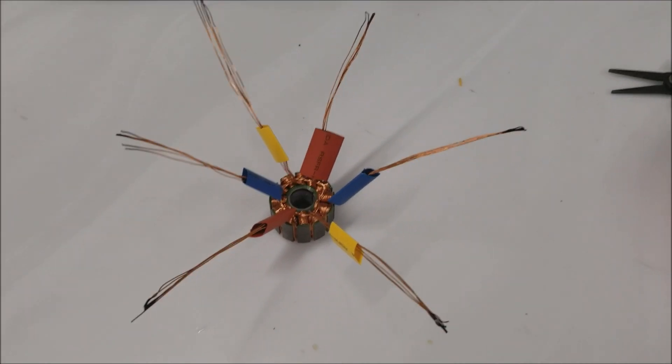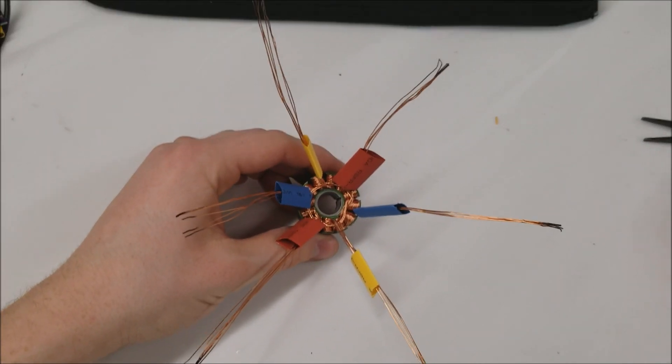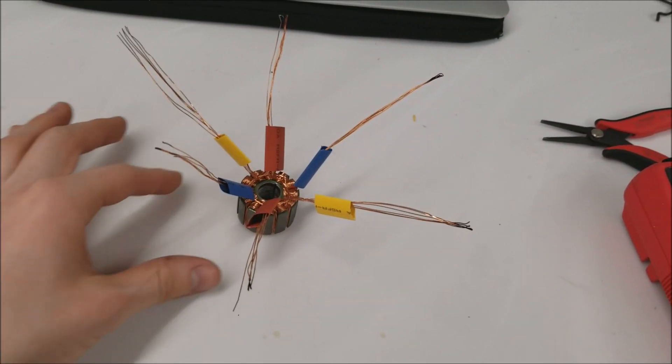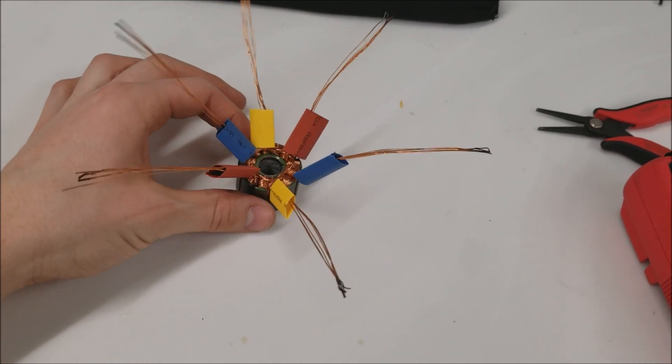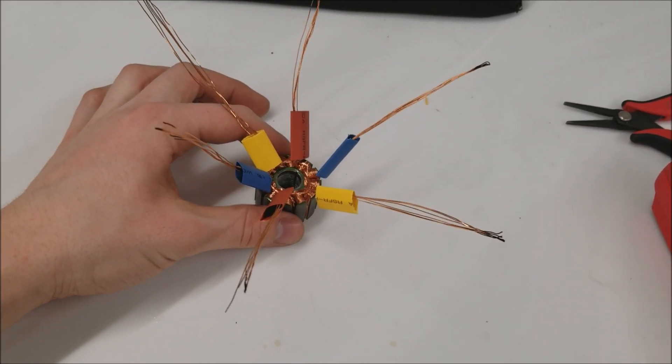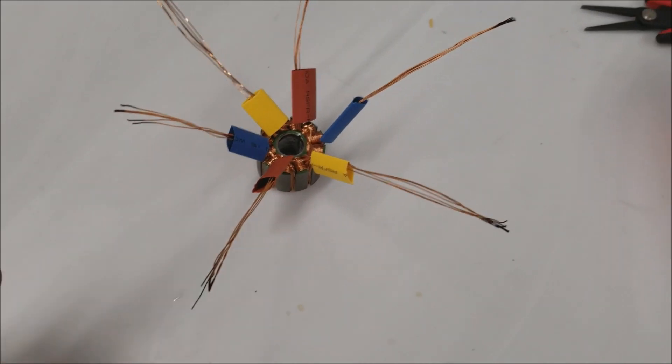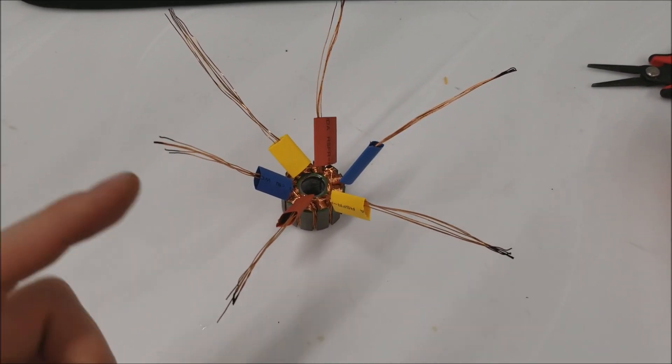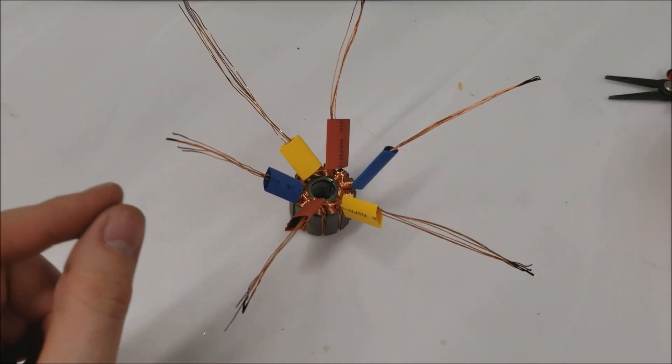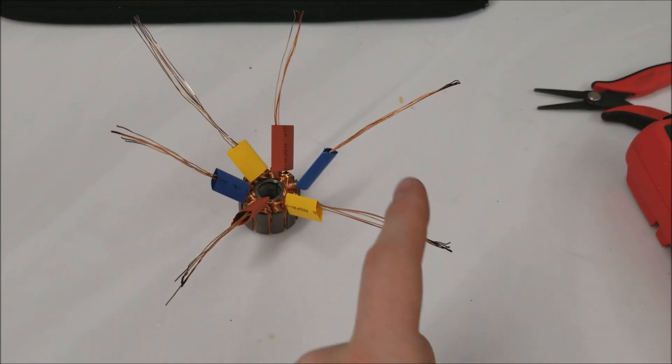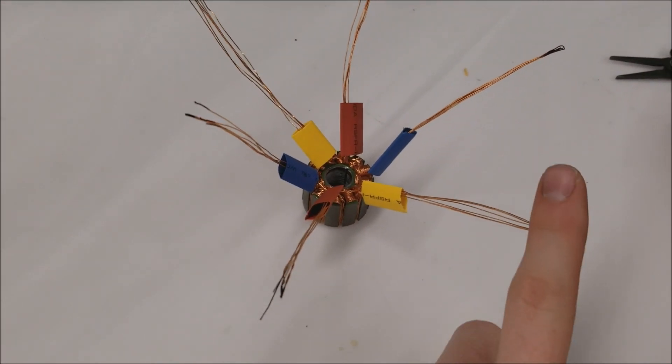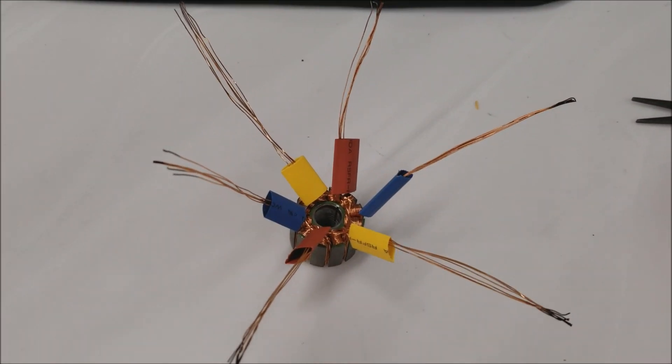Now I've separated all three phases into the six ends. I've used a multimeter to check which two ends belong to the same phase. So you can see yellow is one phase, red is another phase, and blue is another. Now that you have your three phases, you're going to take one red, yellow, and blue, and connect them all together. And then the other red, yellow, and blue will be the three wires going to your ESC. So instead of these three wires being a combination of the three phases, you'll just have the single yellow, single blue, and single red coming out of the ESC.